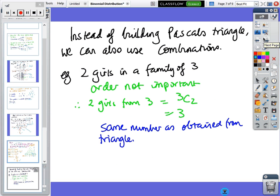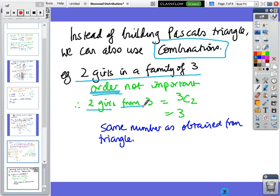There's another way of doing it. Instead of building Pascal's triangle, we can use combinations. For instance, two girls in a family of three - the order is not important. So when we're choosing two from three, that's ³C₂. And ³C₂ is three, which is the same number you got from Pascal's triangle. Pascal's triangle works, combinations work - it doesn't matter which way you do it.